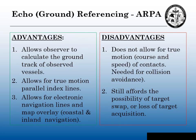Echo referencing or ground stabilization on an ARPA — advantages and disadvantages. The advantages: it allows us to calculate the ground track of any of our tracked targets. You can do this with ground stabilization and do not need echo referencing to do this. It allows for true motion of parallel index lines, and allows for electronic navigation lines and map overlays for coastal and inland navigation. The disadvantage: it doesn't give us true courses and true speeds, which we need for collision avoidance. And since it's an ARPA with an acquired target, there's still the possibility of a target swap or loss of acquisition, such as in a heavy rainstorm.